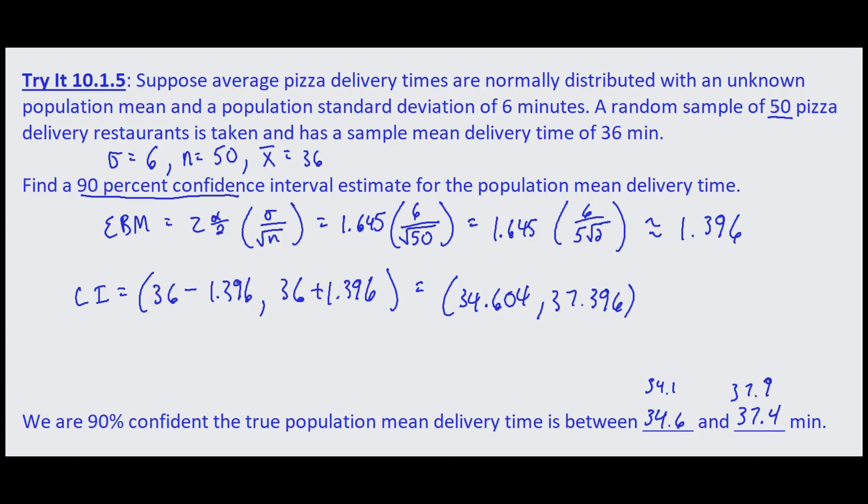So what did increasing the sample size do for us? It narrowed the interval just a little bit. It made the lower bound a little bit higher, made the upper bound a little bit lower. So same confidence, smaller interval because we increased the sample size.